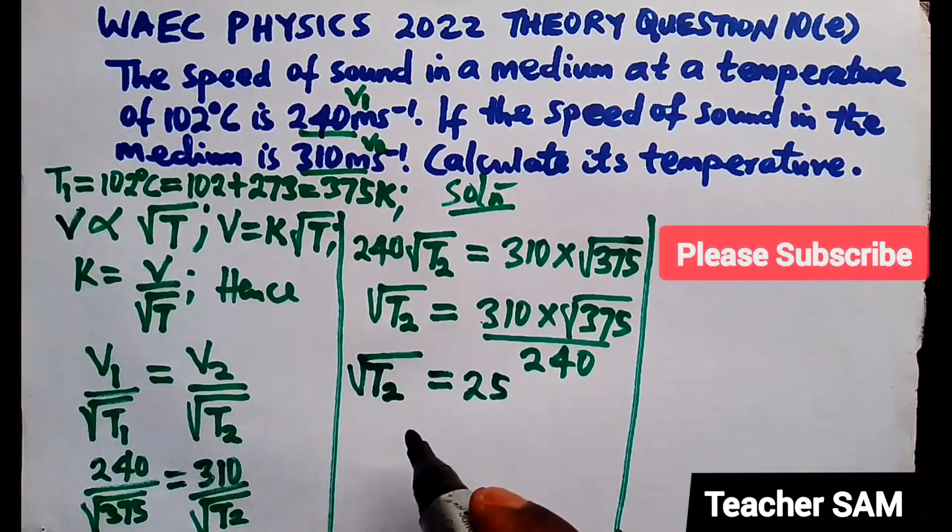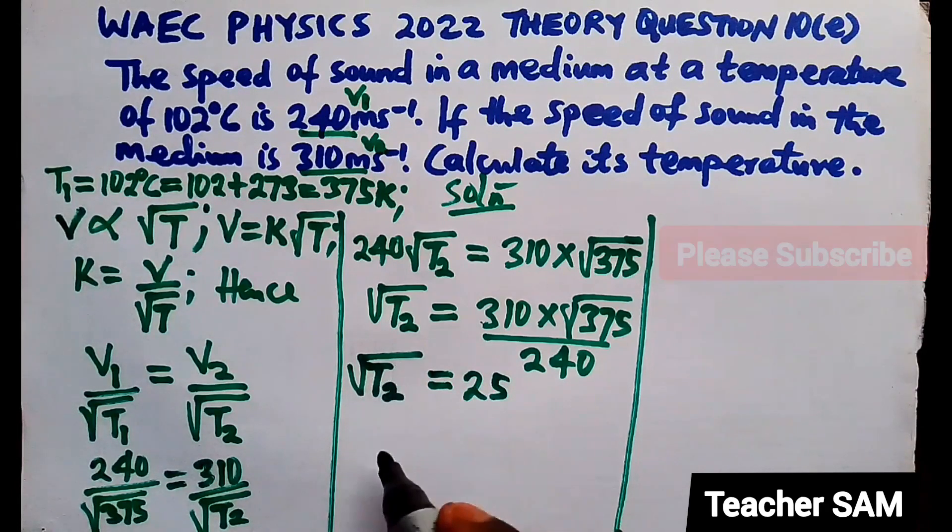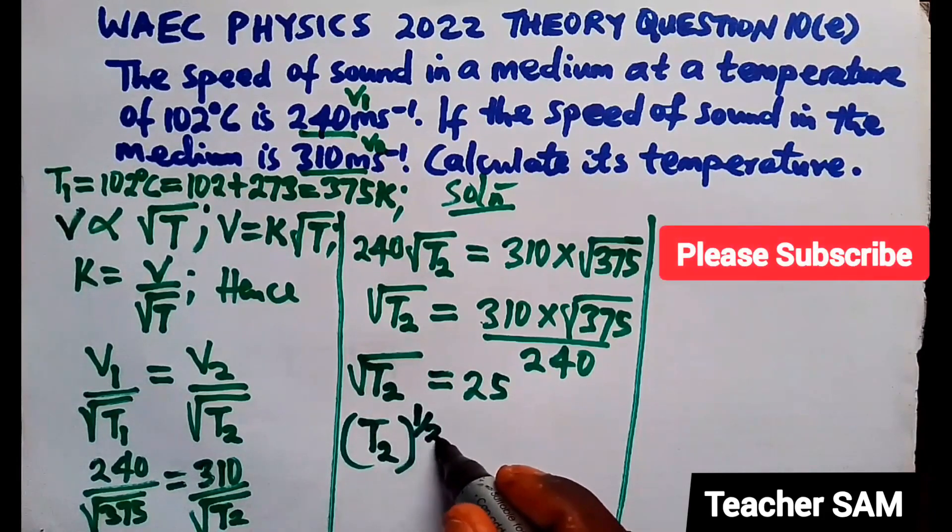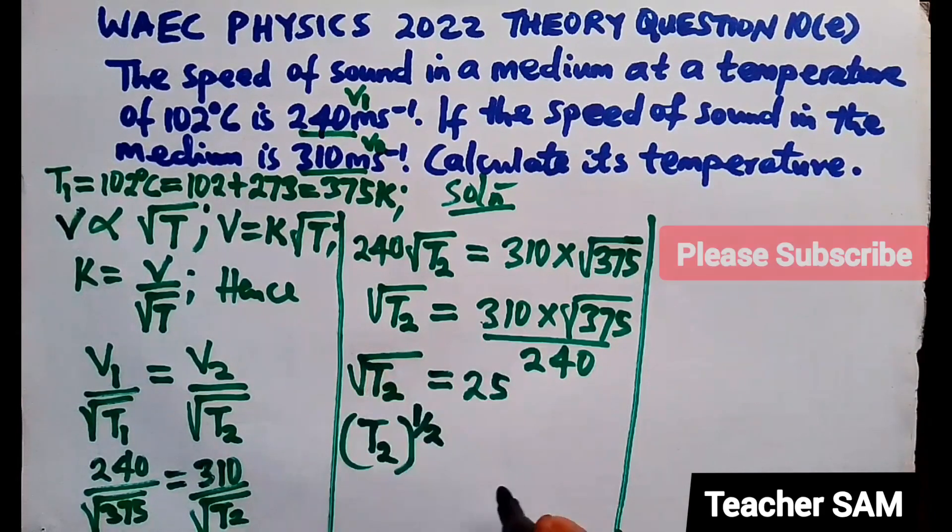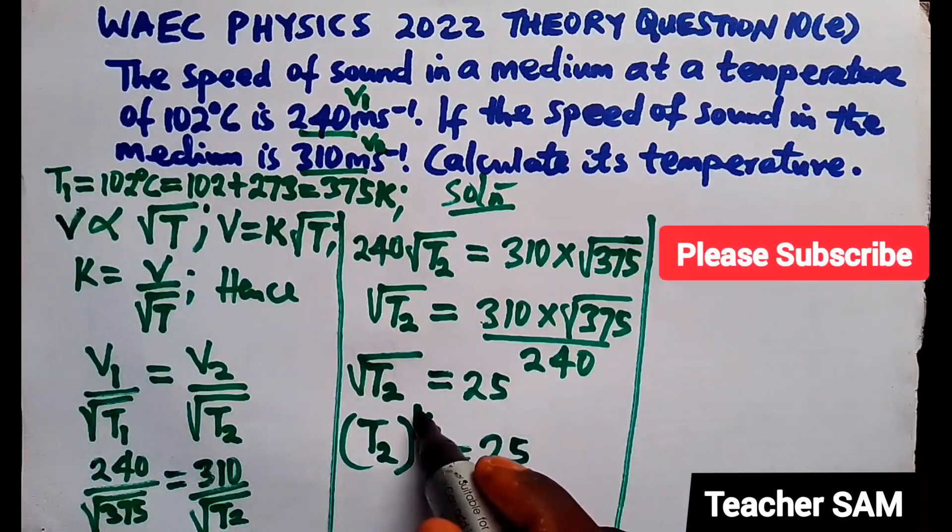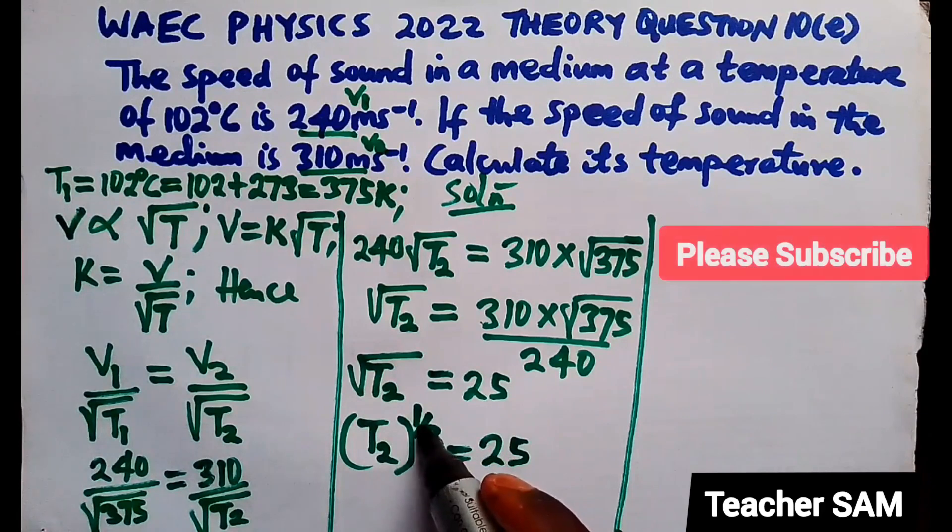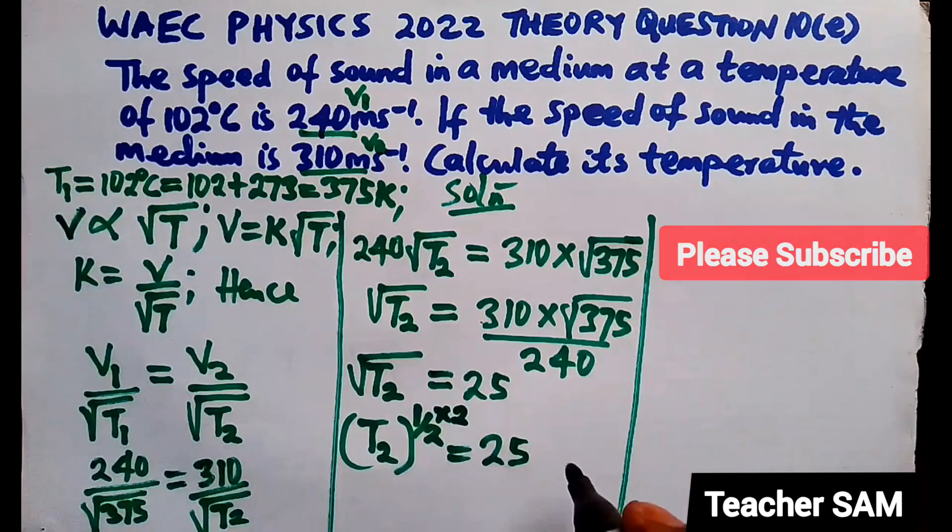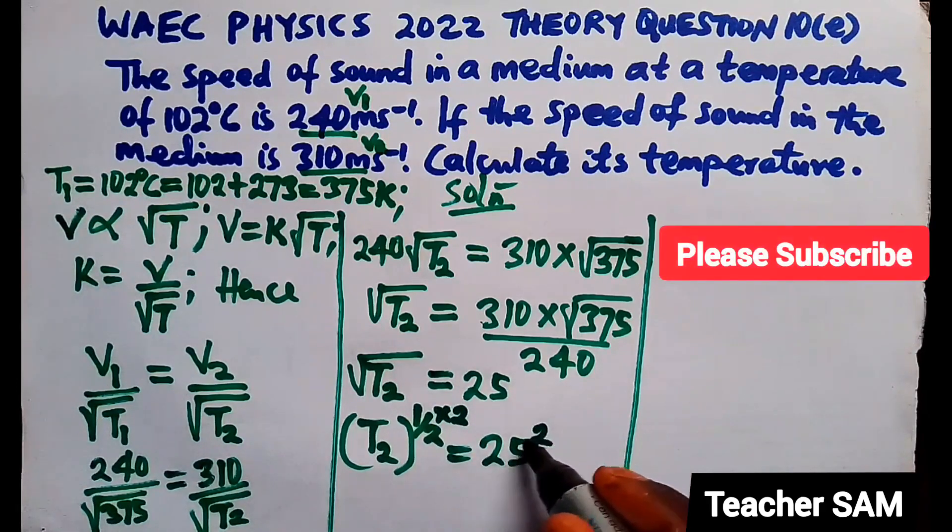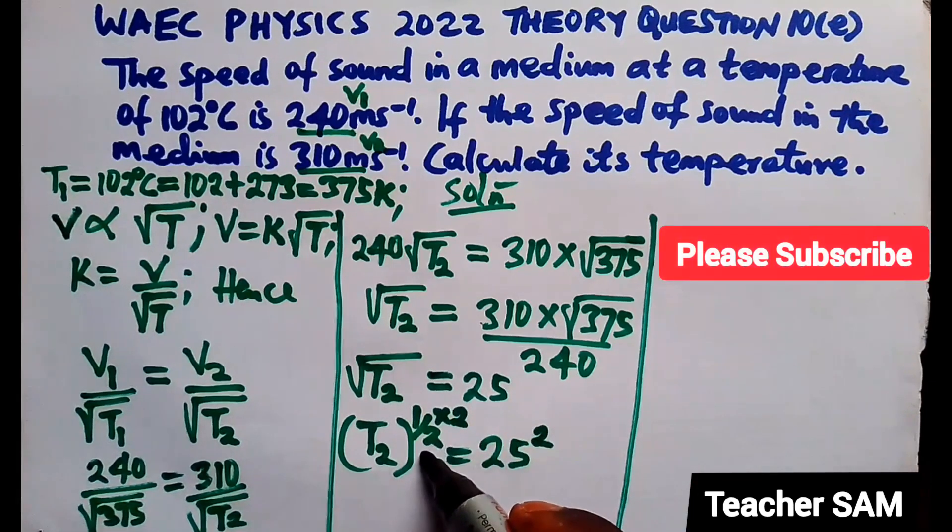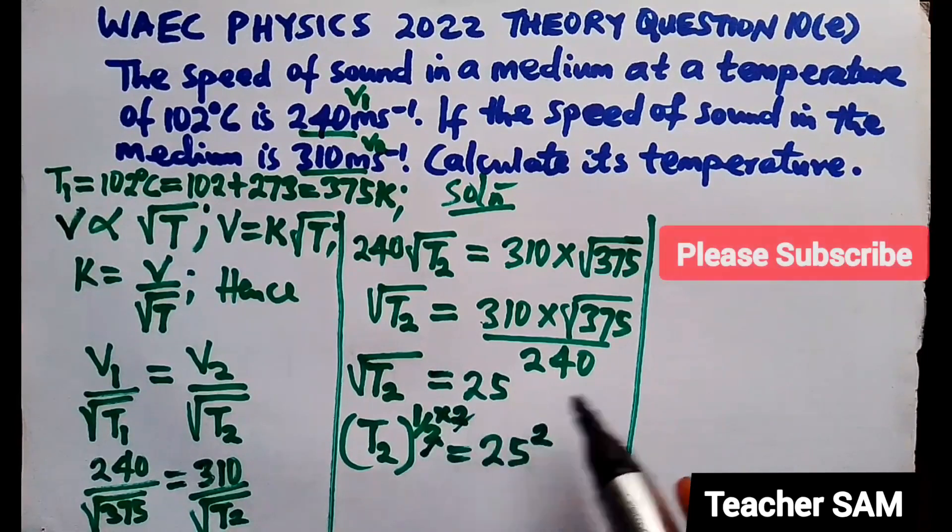Now, don't forget that from indices, for us to remove this square root, this is the same thing as having T2 raised to power 1 over 2. But this is what we are having here. So, this is equals to 25. Now, for us to remove this power of 1 over 2, if we multiply here by 2, multiply this power by 2, also multiply the power. There is power here of 1. Multiply this by 2. Multiply this by 2. That is the powers. Multiply the powers by 2. If you notice, if you do that, you notice that this 2, we take care of this 2 and that will be out.